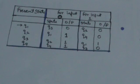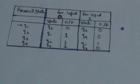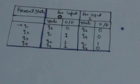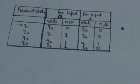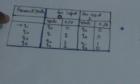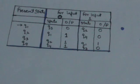We can also represent the Mealy machine in graphical form. When we represent it in the form of a graph, that graph is also called a transition diagram. In this graph, nodes represent the states of the Mealy machine.